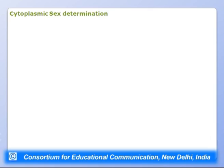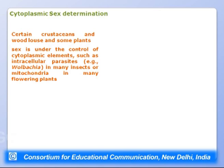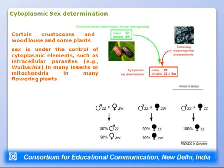Cytoplasmic sex determination is found in certain crustaceans, woodlice, and some plants. Sex is controlled by cytoplasmic elements such as intracellular parasites — for example, Wolbachia in many insects — or mitochondria in flowering plants. In woodlice, a typical ZZ/ZW mode normally applies, but when females are infected by an intracellular parasite, cytoplasmic sex determination occurs: ZZ males are forced to become females. Since the parasite is transmitted from mother to offspring, it enforces femaleness in the progeny.